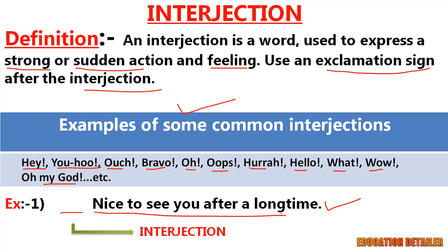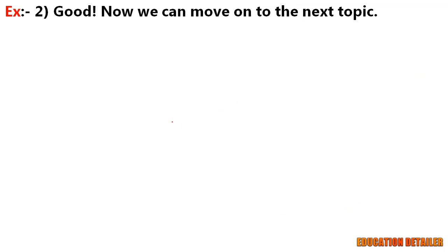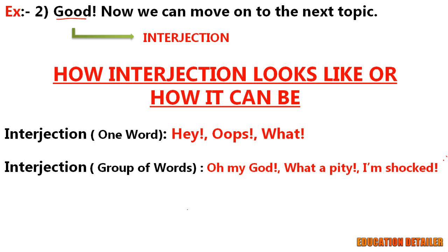In the next example — 'Good, now we can move on to the next topic' — 'good' is an interjection used to express joy or happiness. Before we go to the types or roles of an interjection, we must know how an interjection looks. Most interjections we use are one word, like hey, oops, what, etc., but some interjections are more than one word.